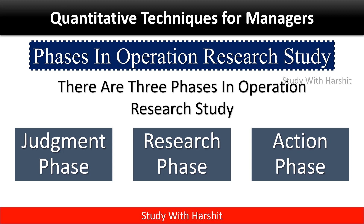Phases in Operation Research Study: There are three phases in an Operation Research study. First, the Judgment phase. Second, the Research phase. Third, the Action phase.